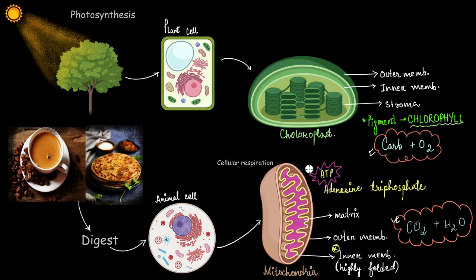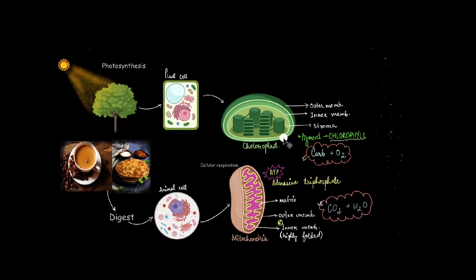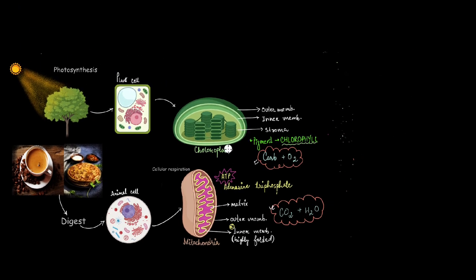And because of this superpower of these two organelles, the chloroplast and mitochondria were able to attract the attention of a lot of researchers. Many came up with their own hypothesis explaining how these two organelles came into existence in living cells. And before we end this video, I would like to share with you a very interesting theory about the existence of these two superorganelles inside living cells.